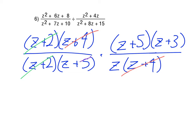and also those z plus 5's. So we end up with z plus 3 over z as the result.